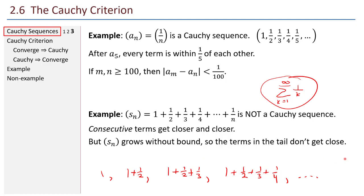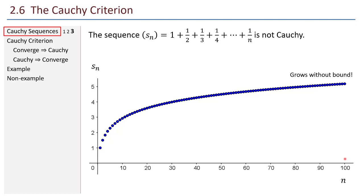Here's a picture. You can see that as I go down the sequence, it's growing more and more, but more and more slowly. I do know it grows without bound. Also, consecutive terms of the sequence are getting closer — but that's not enough to tell us the sequence is Cauchy. Just the fact that consecutive terms are getting closer is not sufficient. The terms in the tail don't stay very close to each other.